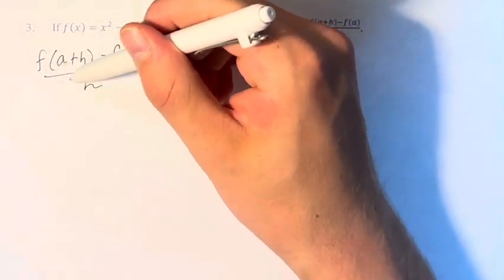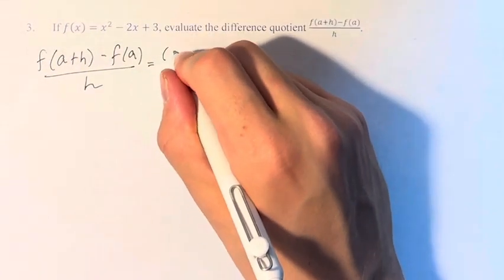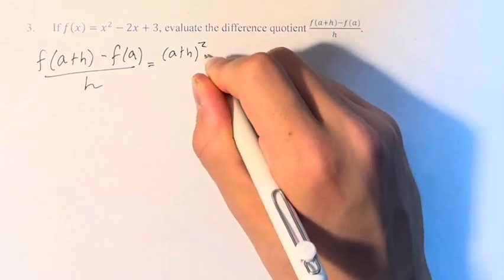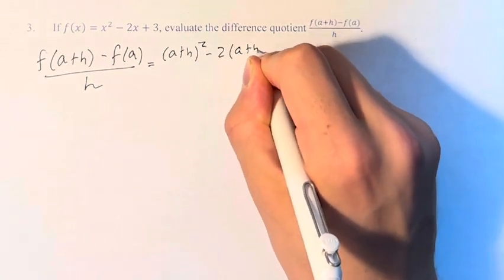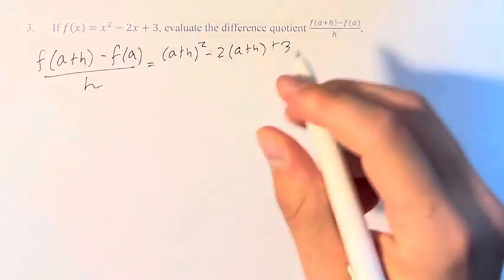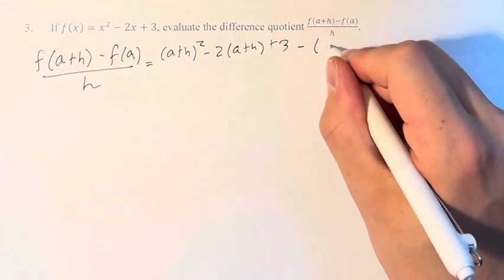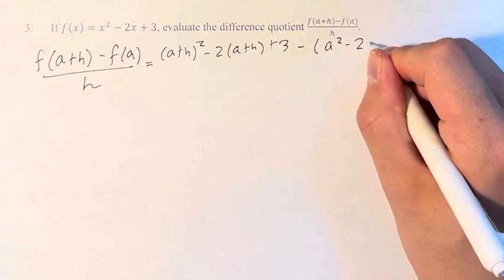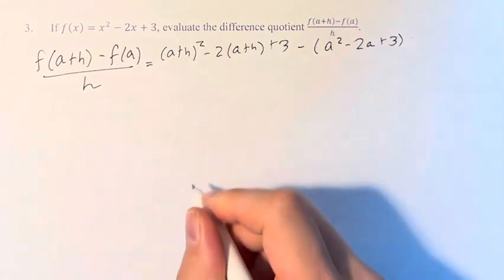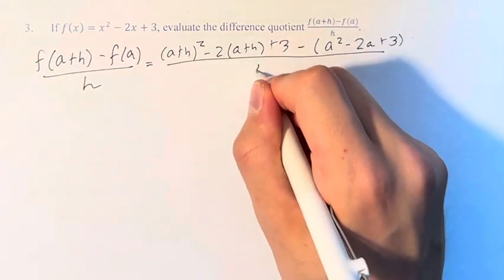So we just have to plug in a+h into f. It gives us (a+h)² - 2(a+h) + 3. Then we subtract f(a), so we have to plug in a. So a² - 2a + 3. And we divide this whole thing by h, and now we can simplify.